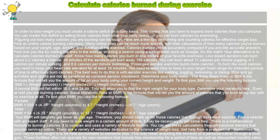Do the math yourself as an alternative — calculate calories burned on your own. Know how many calories you burn in one minute of your favorite exercises. Low-impact aerobics can burn about 6.2 calories a minute, so 30 minutes of aerobics will burn away 186 calories. You can burn about 11 calories per minute jogging, 4.1 calories per minute walking, and 8.6 calories per minute swimming.